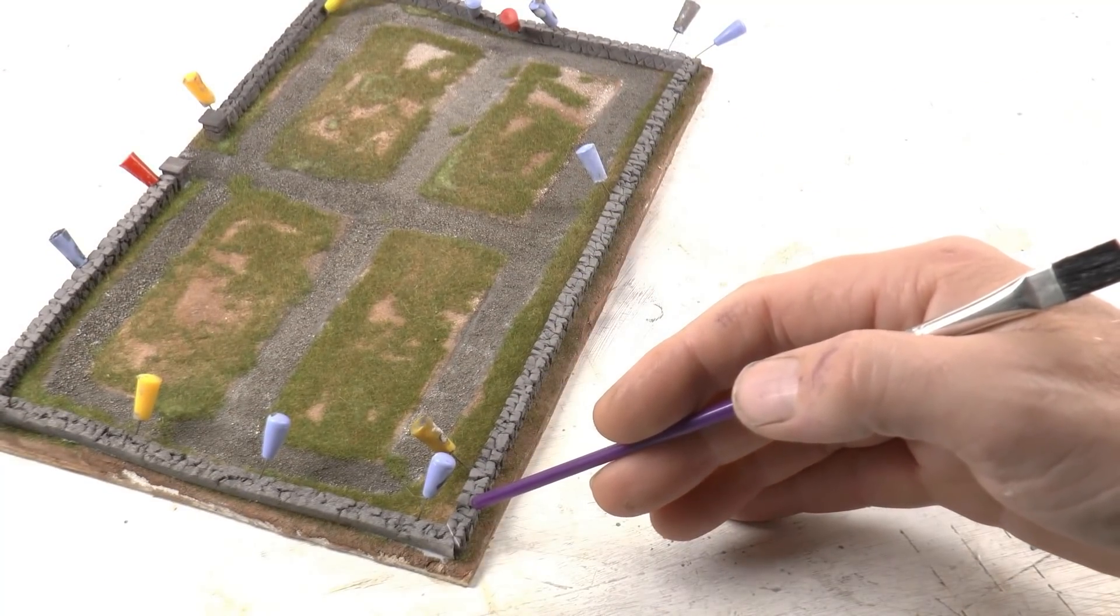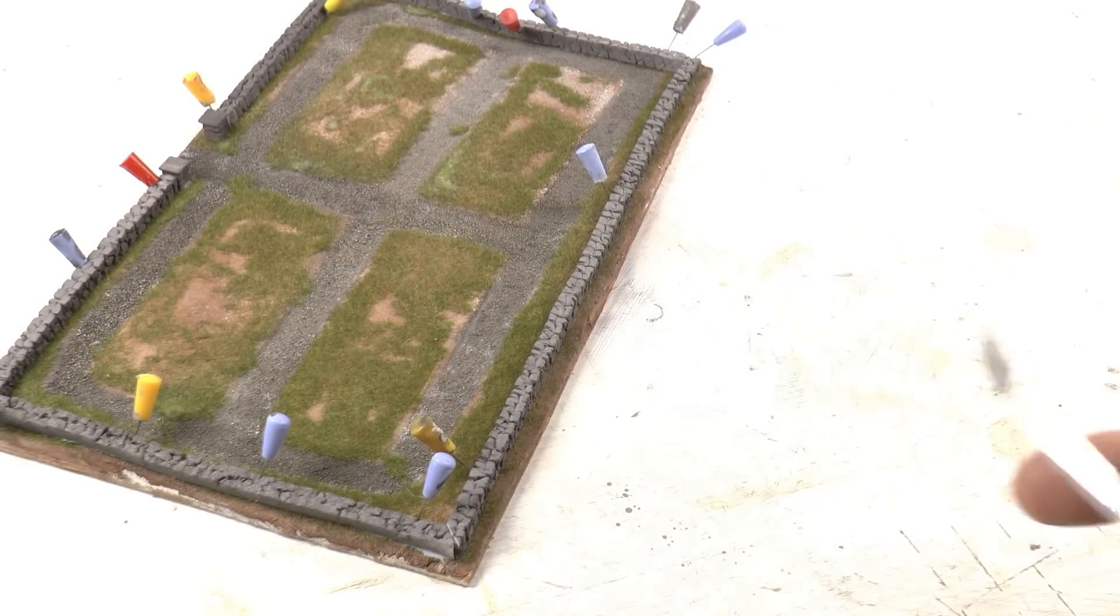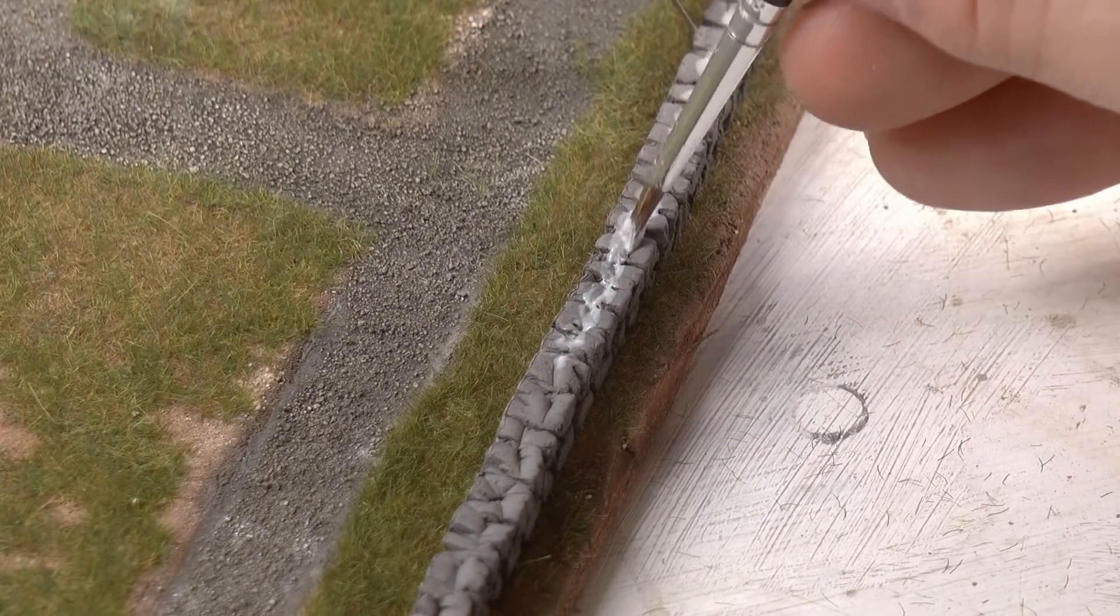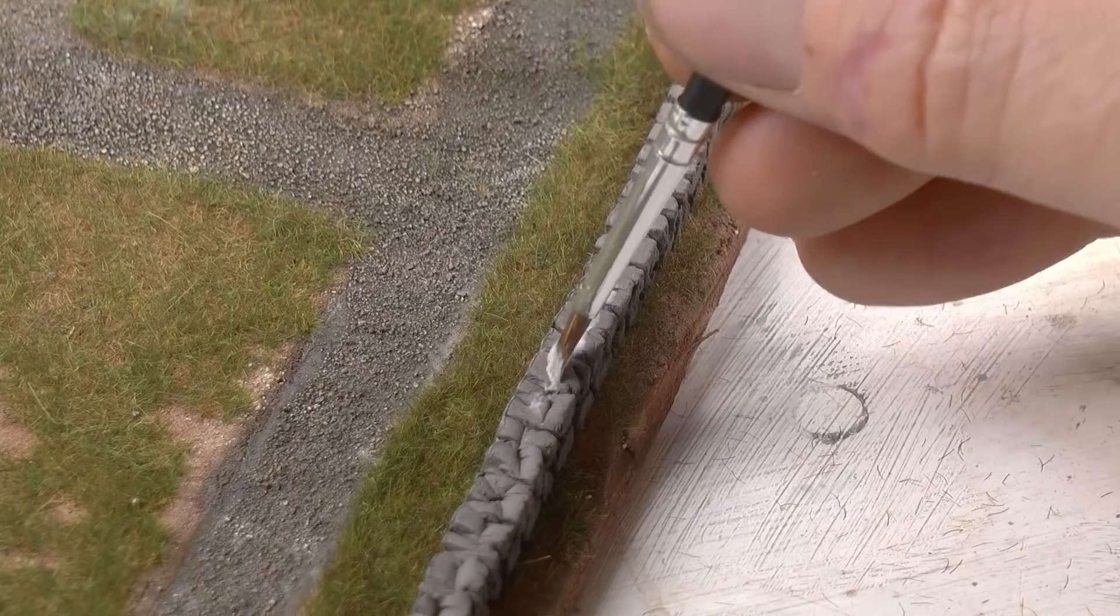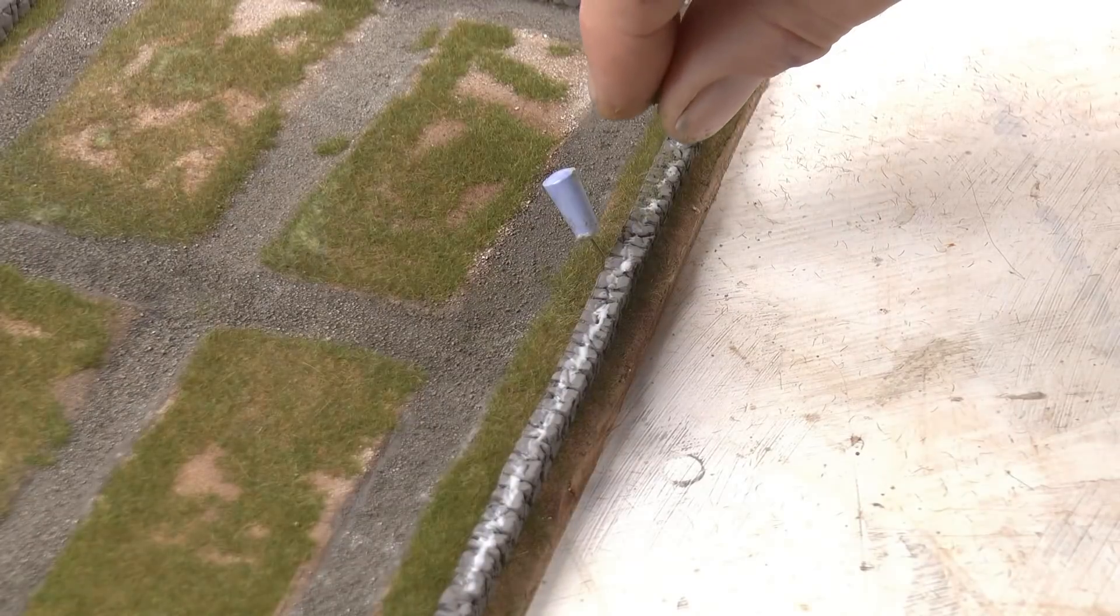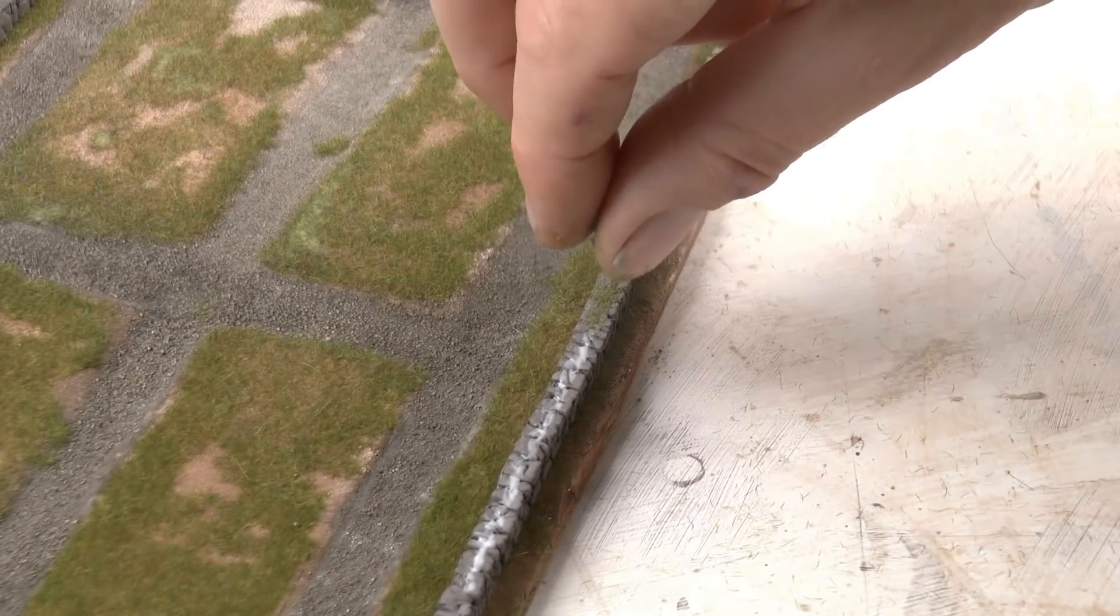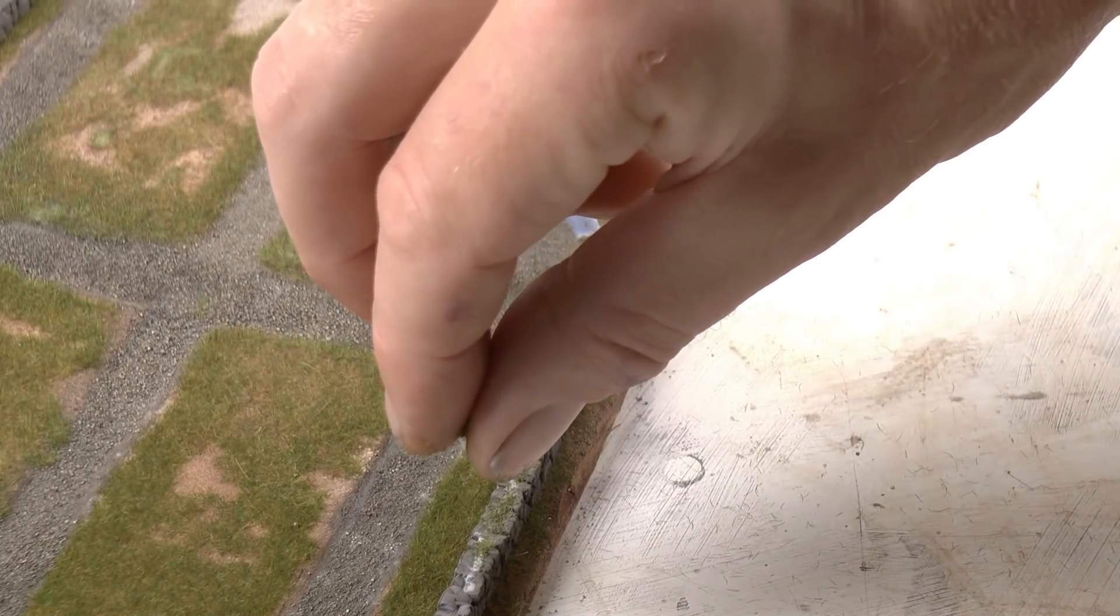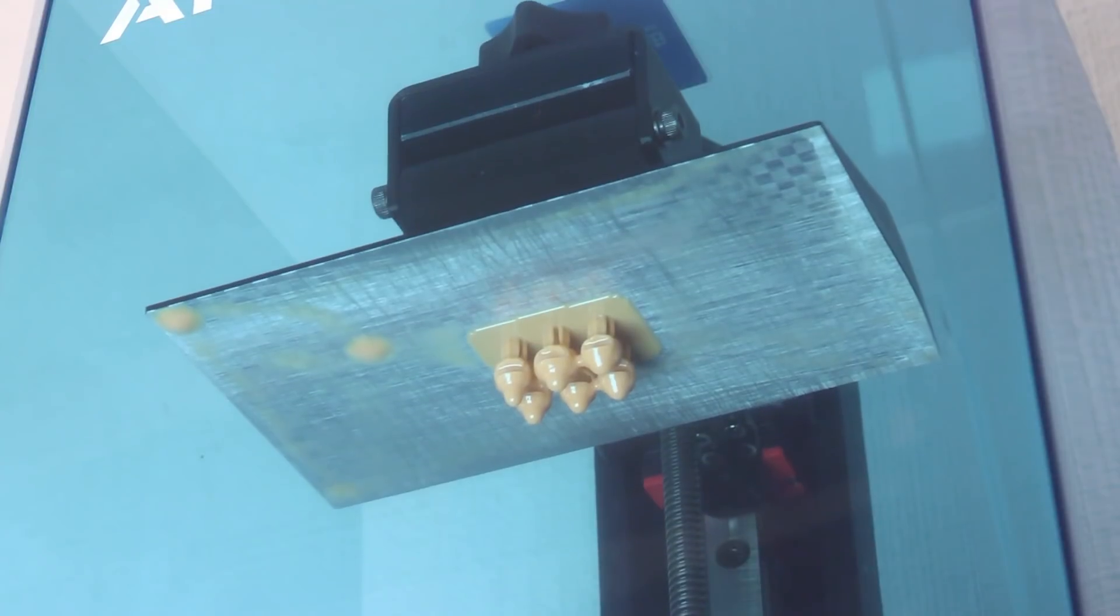But I would like to add some grass or moss on top of the stone wall here. So in order to do that I'm applying some of that PVA glue here. And then I sprinkle in Woodland Scenic fine turf in color burnt grass. All right. Now the 3D print has completed.